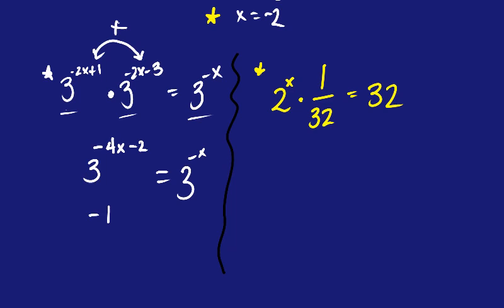So you can say negative 4x minus 2 equals negative x, and we can solve that. So plus 4x. So I have negative 2 equals 3x. I divide by 3, I've got x equals negative 2 thirds.